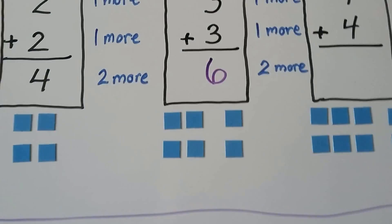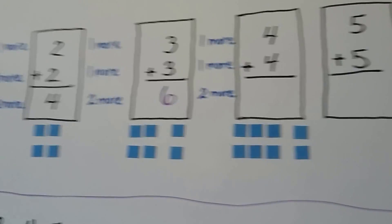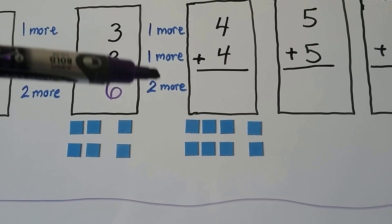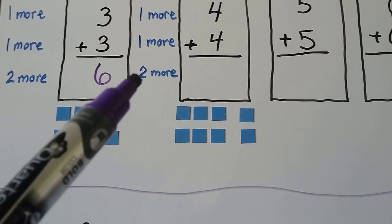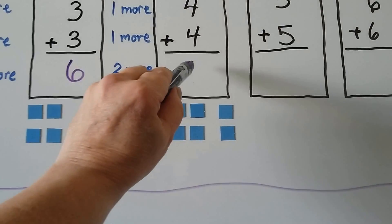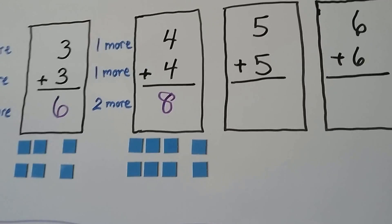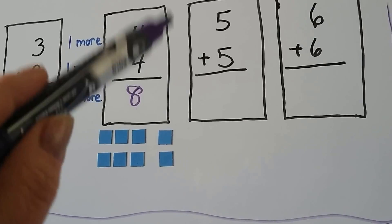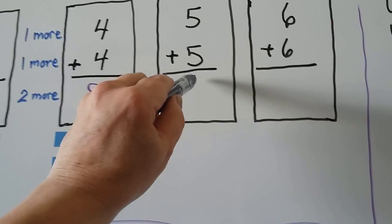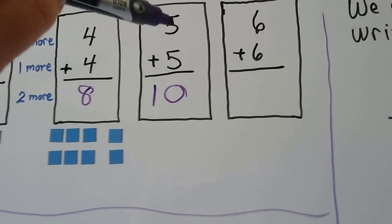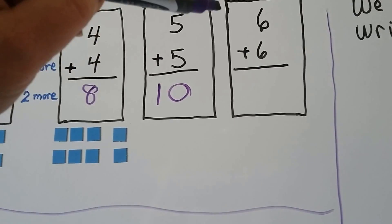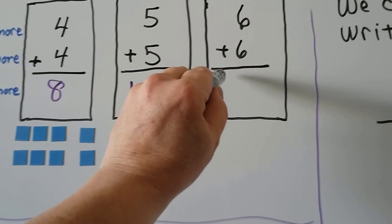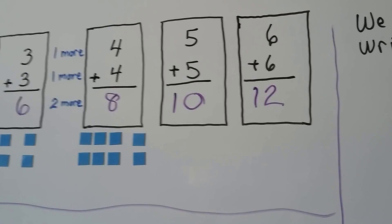See the pattern? It's making 2 more every time we go up with these numbers. Adding one more to each 3 makes them 4s — one more and one more is 2 more in all, so 6 and 2 more is 8. So 4 plus 4 is equal to 8. Adding one more to each 4 makes them 5s — this sum is 2 more than the last: 9, 10. So 5 plus 5 is equal to 10. Adding one more to each 5 makes them 6s — 2 more in all: 11, 12. So 6 plus 6 is equal to 12. Each sum was 2 more.